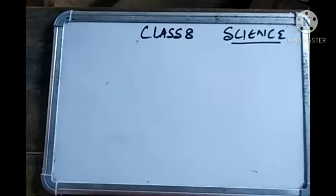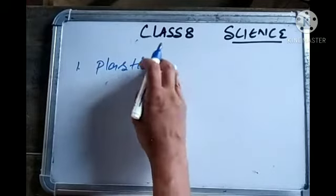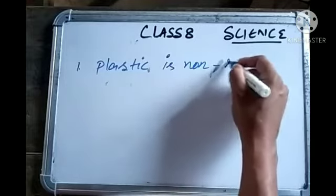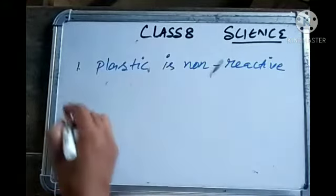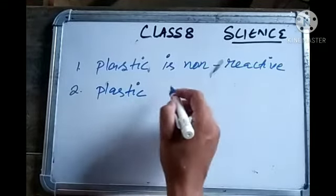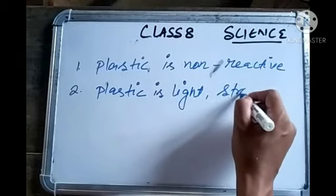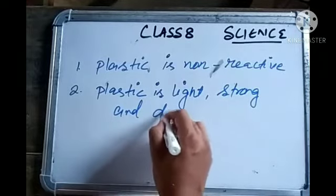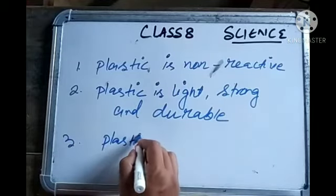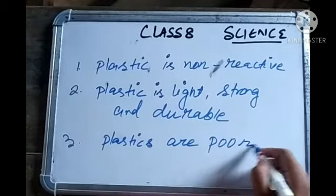Three points are discussed under this topic. Number one: plastic is non-reactive. Number two: plastic is light, strong, and durable. Number three: plastics are poor conductors.